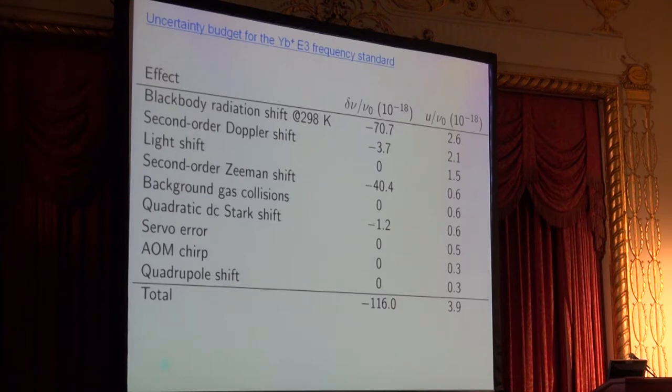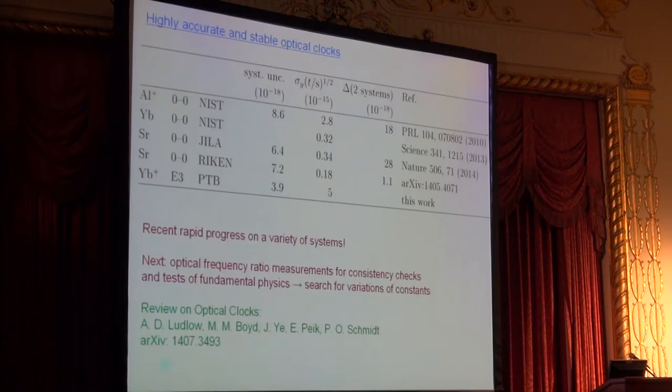This is today the lowest uncertainty estimate for an optical atomic clock. I've summarized here the results from different experiments. As Andrew has mentioned, there has been recent very rapid progress in this field. For a long time, the aluminum ion at NIST used to be the benchmark with the first systematic uncertainty below 10^-17. Now during this year, we have three or four more systems reaching this range of uncertainty.